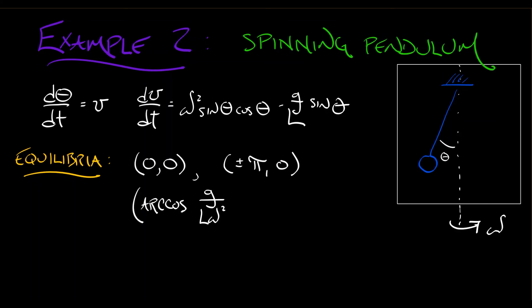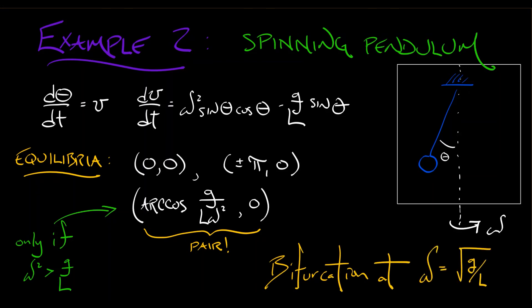But then we also had another equilibrium at arc cosine of g over l omega squared, 0. Now the interesting thing is that this only occurs when it's spinning sufficiently quickly, when omega squared is bigger than g over l because of the domain constraints on our cosine. And because of the way that our cosine works, this is going to be multi-valued. We have a positive and negative pair of such equilibria.